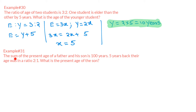Next example: the sum of the present ages of a father and his son is 100 years. Five years back, their ages were in a ratio of 2:1. What is the present age of the son?